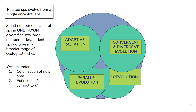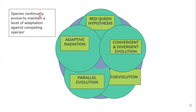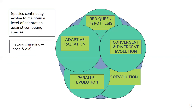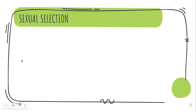Next is the Red Queen Hypothesis, which states that species must evolve continuously in order to maintain a level of adaptation against competition. If a species stops adapting it would lose the race and eventually die out. The best example is the parasite and host relationship — the parasite continuously evolves mechanisms to stay in its host and derive nutrition, while the host continuously evolves mechanisms to get rid of the parasite.